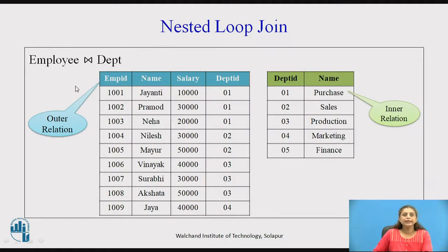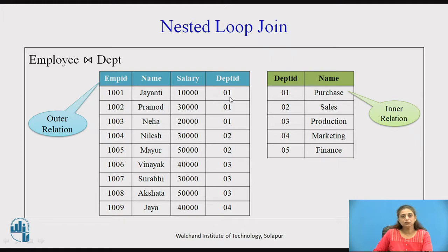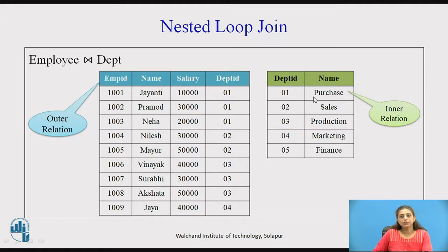Consider we have to perform an employee and department join. Employee is the outer relation and department is the inner relation. The first tuple of employee is taken and the values of common attributes are checked against all tuples of the department relation. Department ID 01 matches department ID 01, so these tuples are concatenated and added to the result.